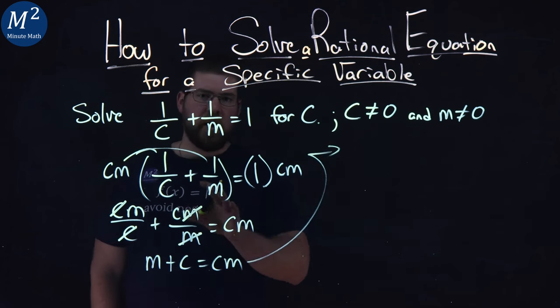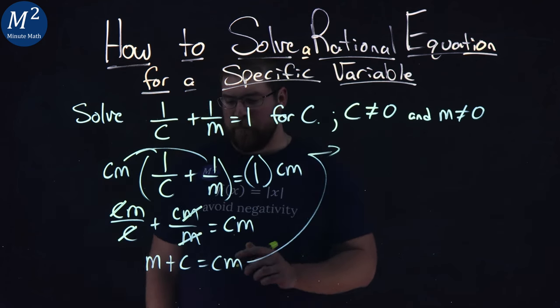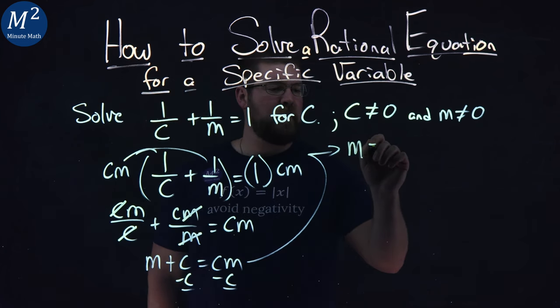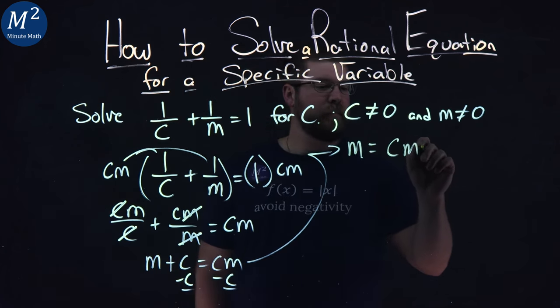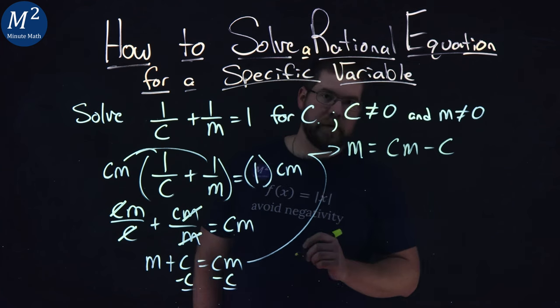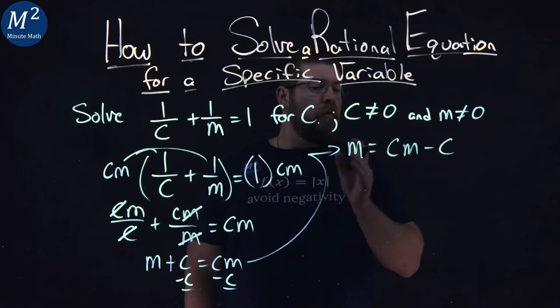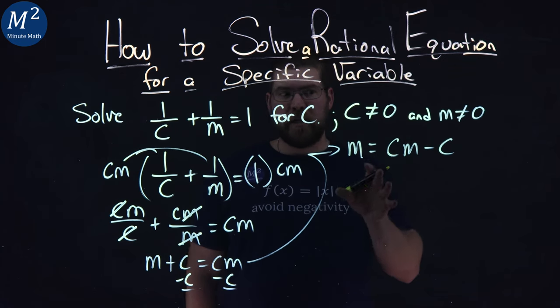Now, with this though, I want to get all the c's together to one side. So I'm going to subtract c from both sides, and I'm left with m by itself equals cm - c. From here, I want to get, again, c by itself.